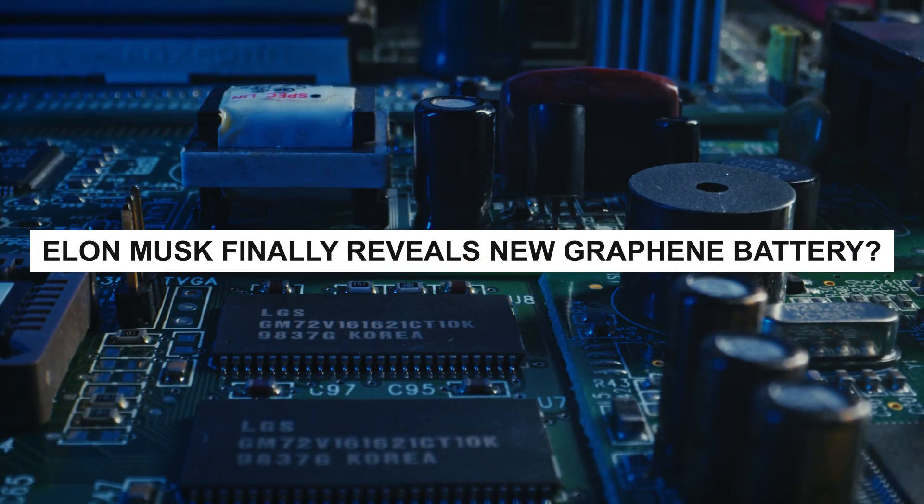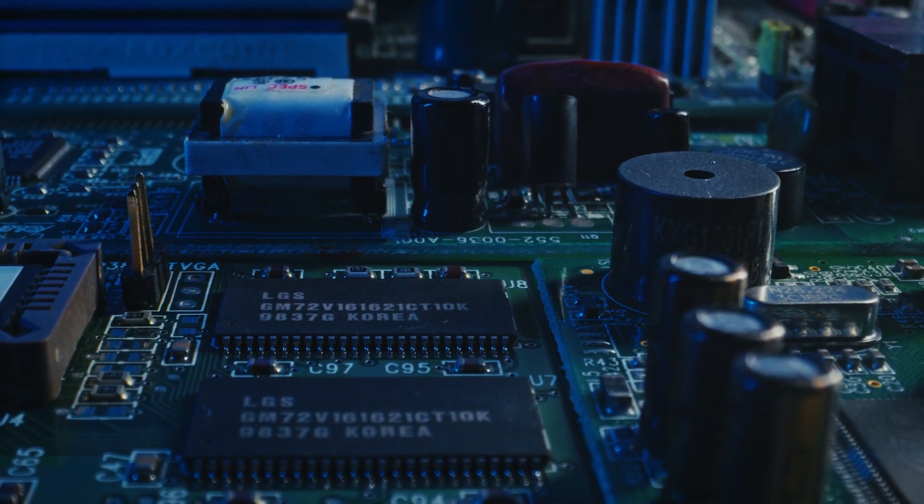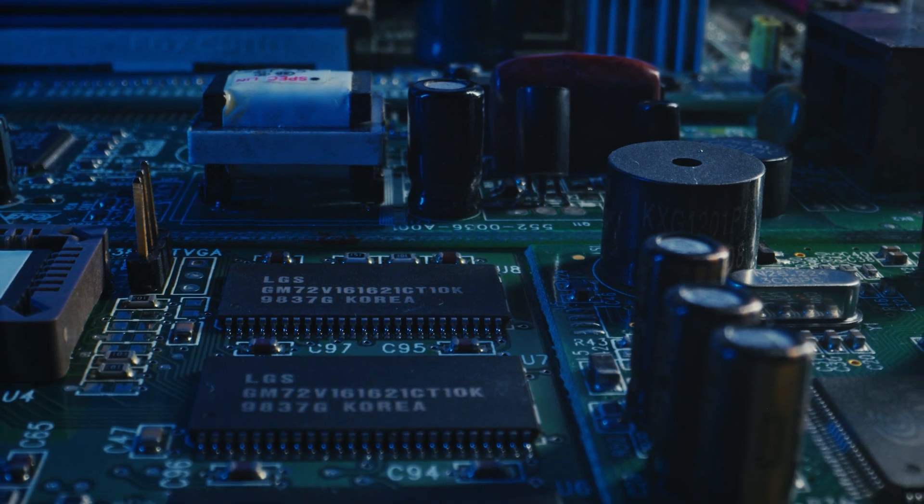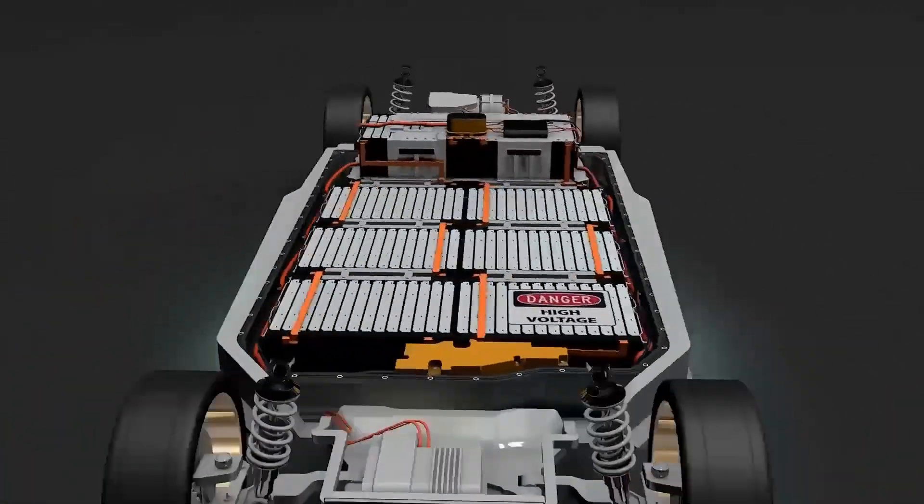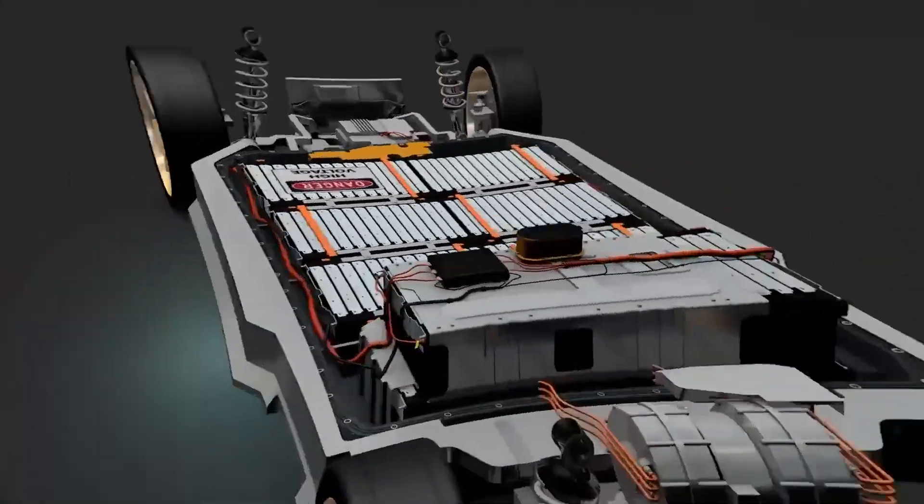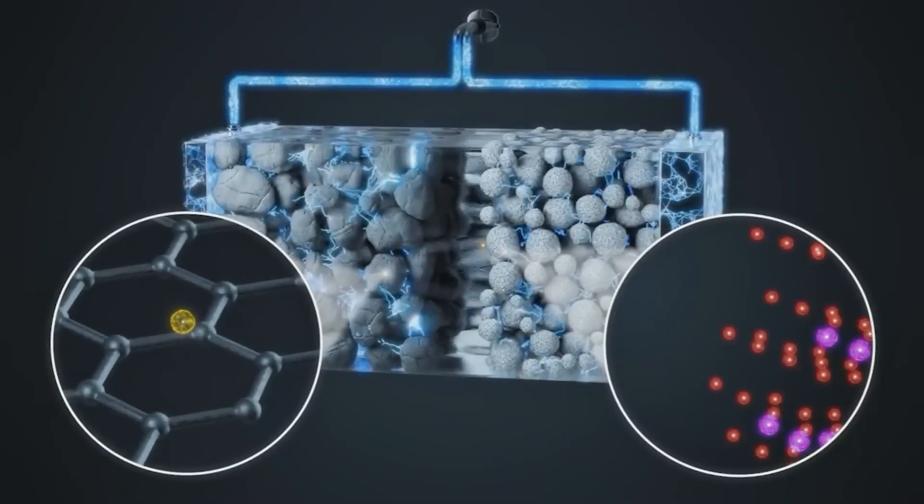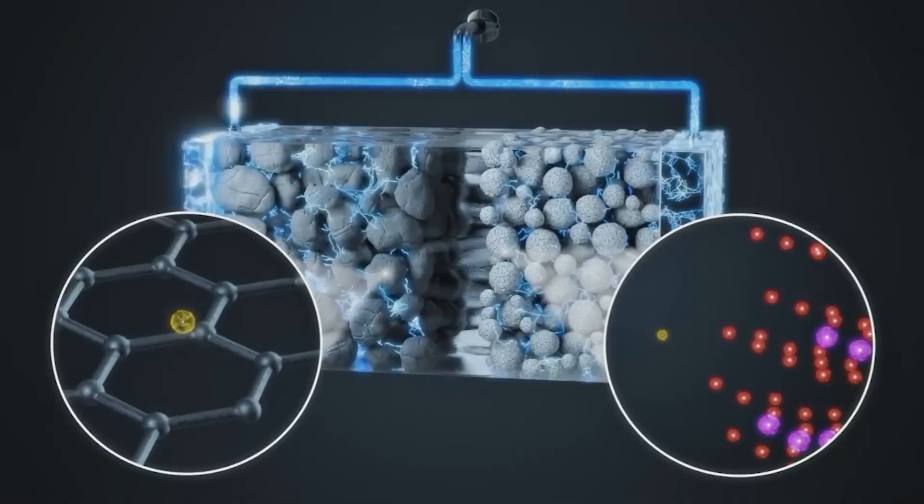Elon Musk finally reveals new graphene battery. Many future-changing batteries are under development, from gold nanowire batteries to tank two-string batteries. Automobile companies are trying to make something that can power their vehicles efficiently and for a long time.